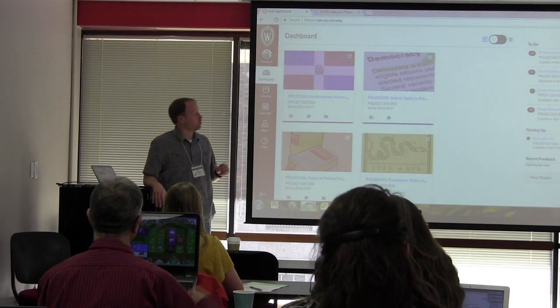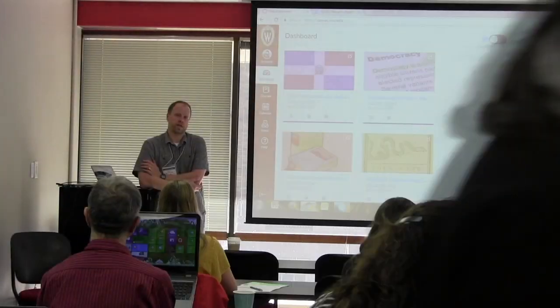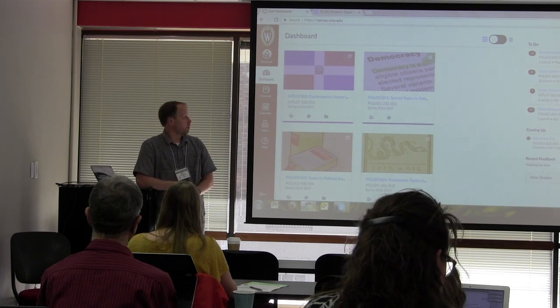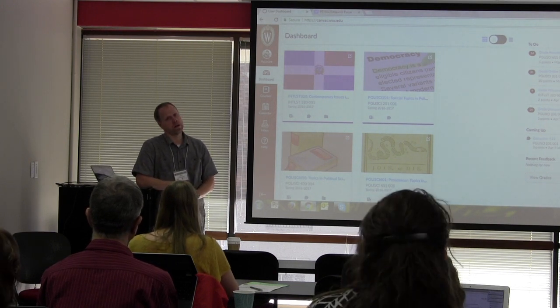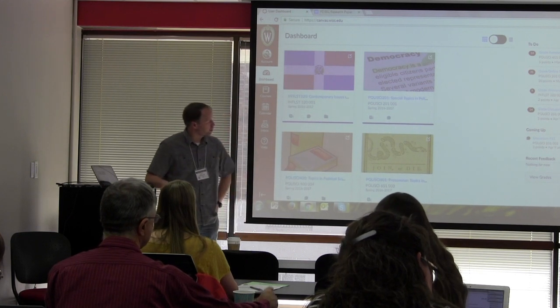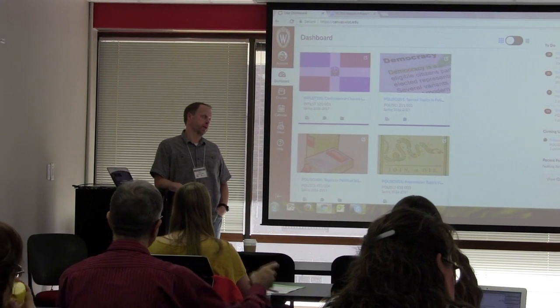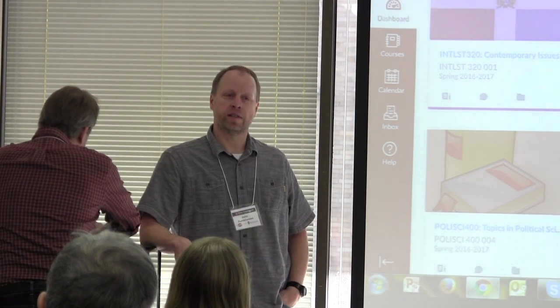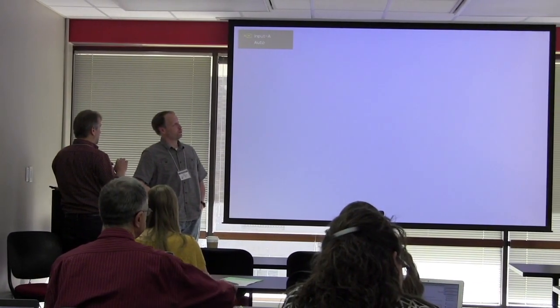I'm John Zumbrennan. I am in the political science department and in particular I teach political theory or political philosophy. I'm going to talk a bit this morning about the use I've been making of the peer grader function in Canvas in this class, which is a junior-senior seminar on topics in political science. My topic is the political theory of the American Revolution — a course where we start around the 1760s, reading pamphlet literature on both sides of the Atlantic, building up to the Declaration of Independence, and thinking about arguments made by both loyalists and revolutionaries.